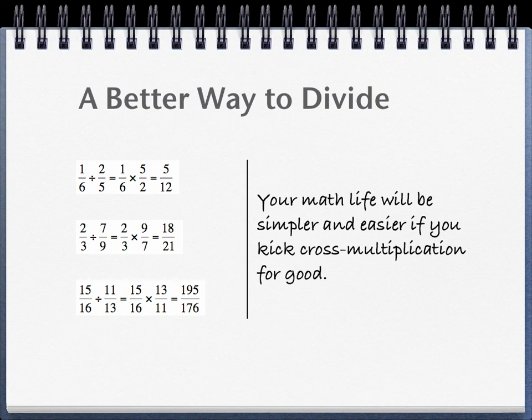The third example is 15 16ths divided by 11 13ths. Again, we can multiply 15 16ths by 13 11ths, which is the reciprocal of 11 13ths, to get 195 176ths.